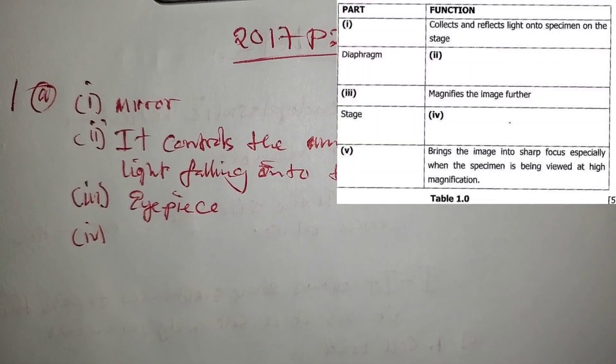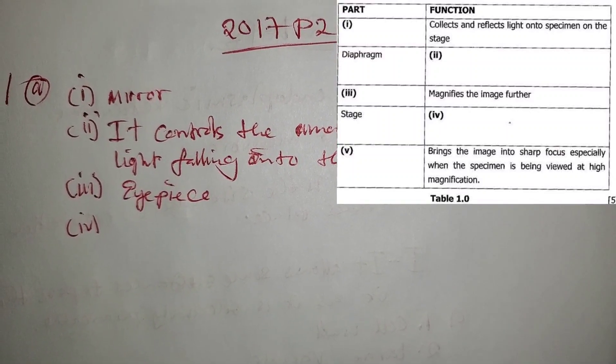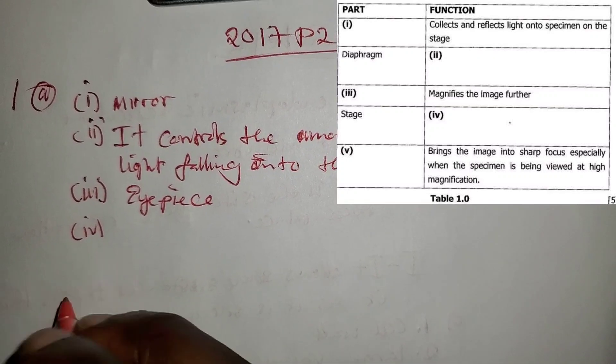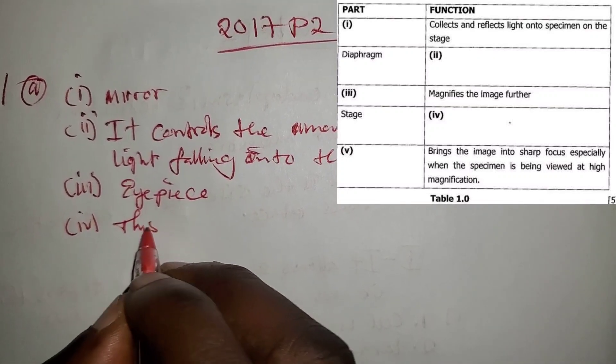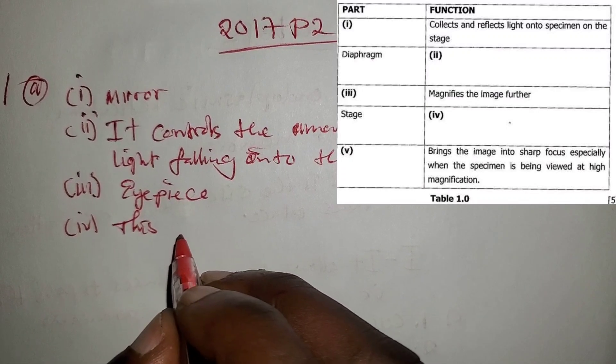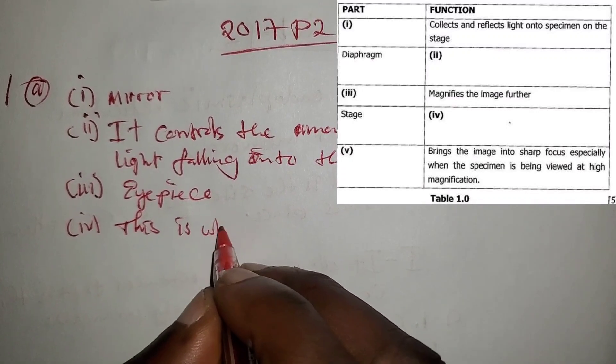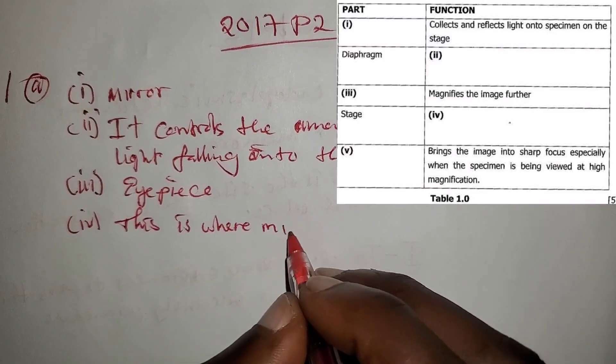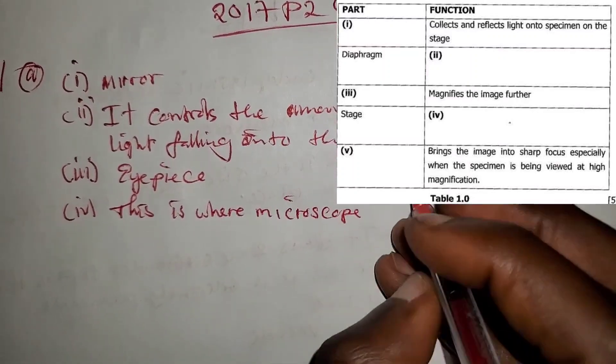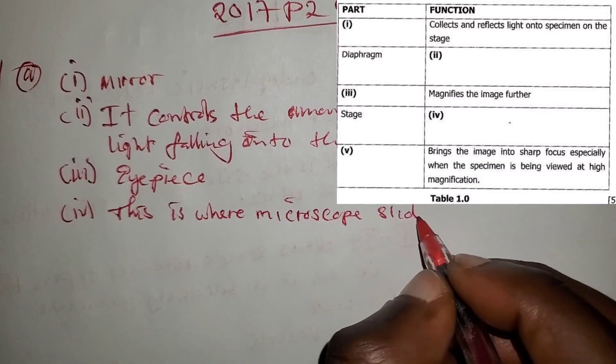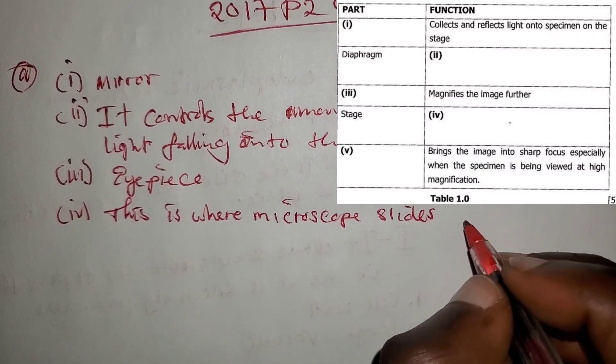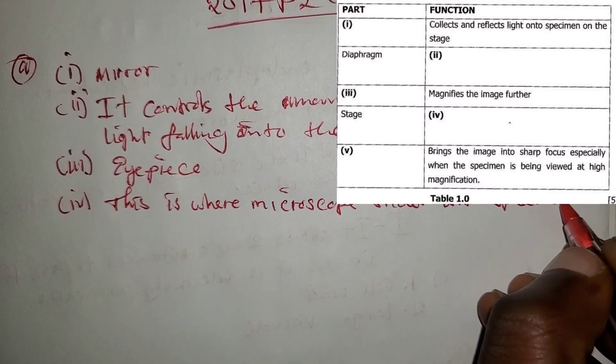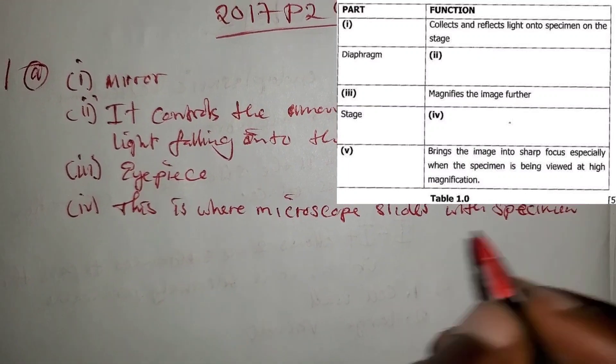Number 4: the stage. What is the function of the stage? This is where the microscope slides with the specimen are placed.